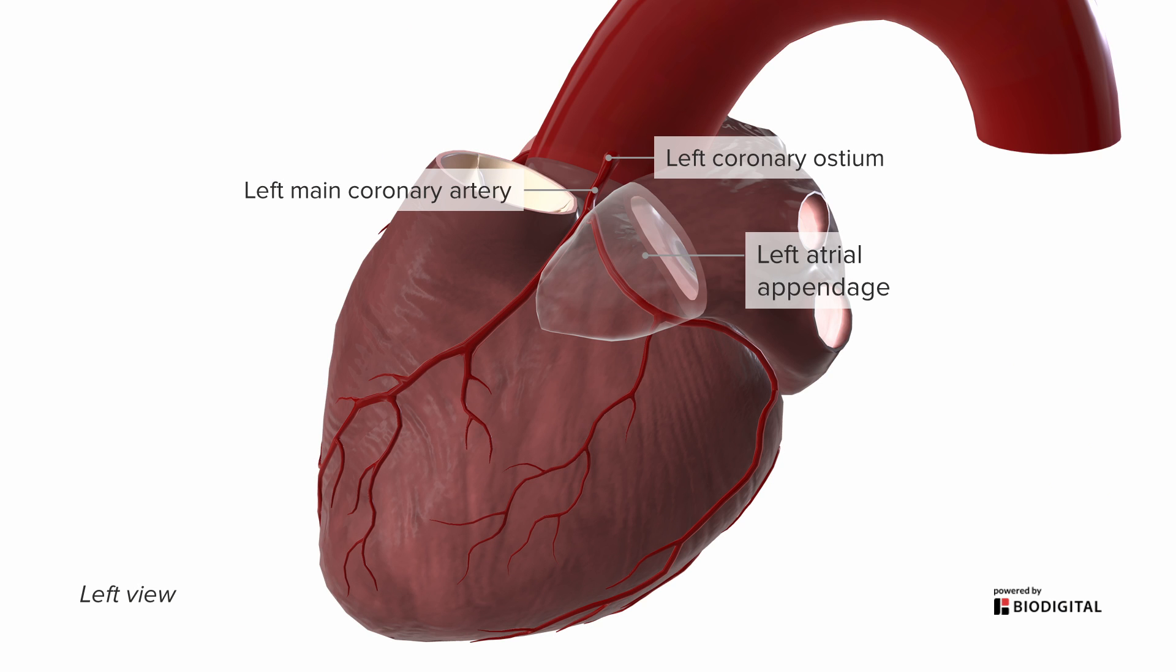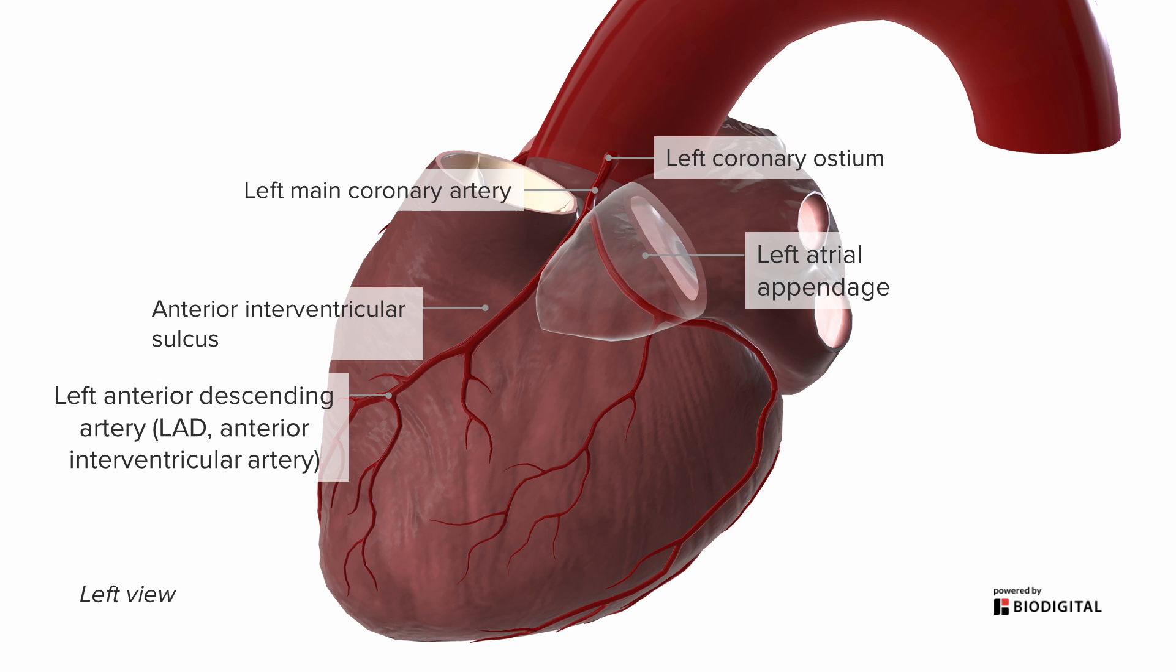One of those branches is going to be a very prominent one going down the anterior interventricular sulcus, hence one of its names, anterior interventricular artery, but it's more commonly known as the left anterior descending artery, or the LAD, providing a lot of the blood supply to the left ventricle.